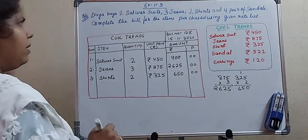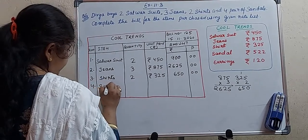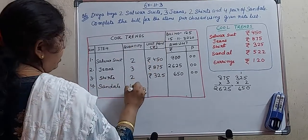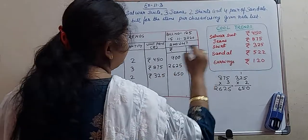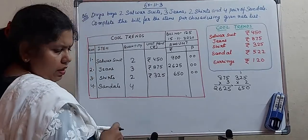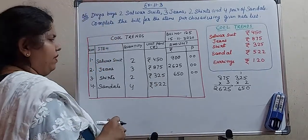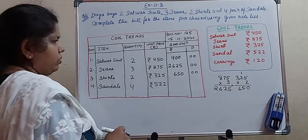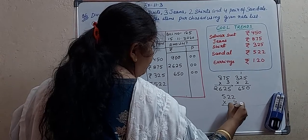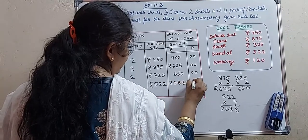The next item is sandals — item number 4. She is getting 4 pairs of sandals, and one pair costs ₹522. We need to multiply 522 by 4: 2 × 4 = 8, 2 × 4 = 8, 5 × 4 = 20. So the amount is ₹2088.00.